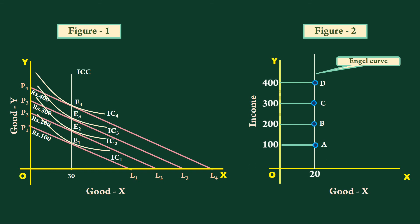This Engel curve is derived from the income consumption curve shown in figure 1, which is also vertical and parallel to y axis. Since the same quantity is purchased irrespective of income, good x is neutral.